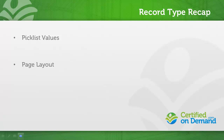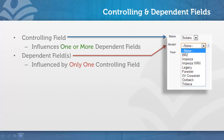But the record type doesn't control either of these entirely on its own. Picklist values are determined by record type and controlling fields. Controlling fields are the ones that allow one field to influence the values that are displayed within another. For instance, when the Subaru Make is selected, only Subaru models are then shown.